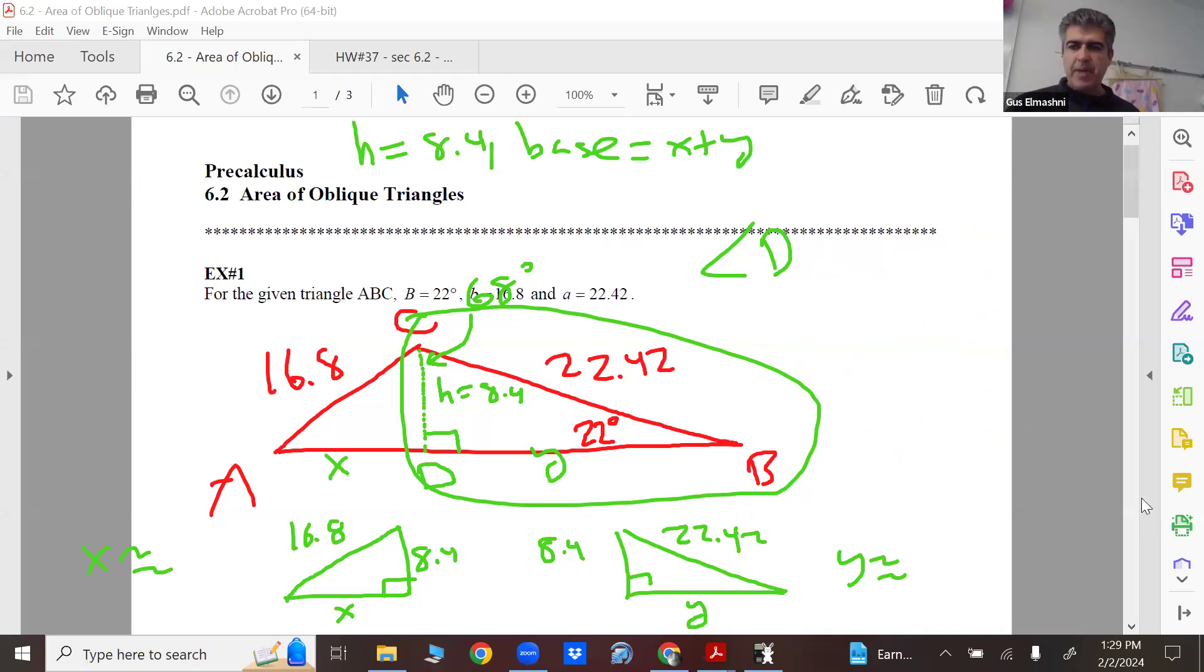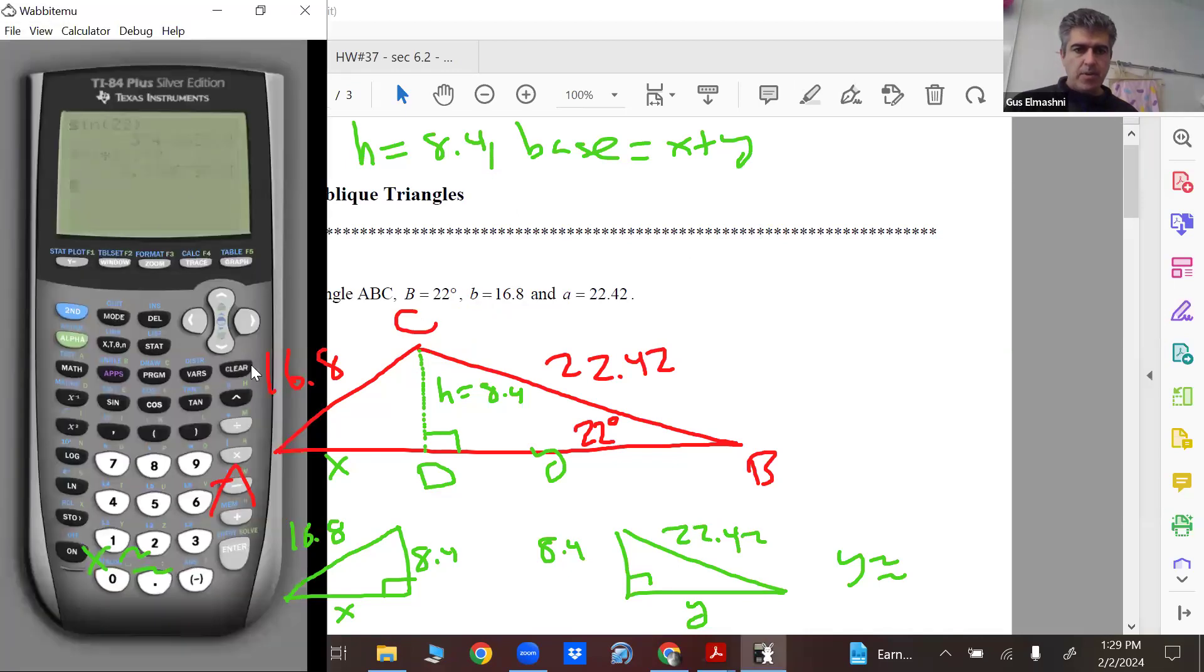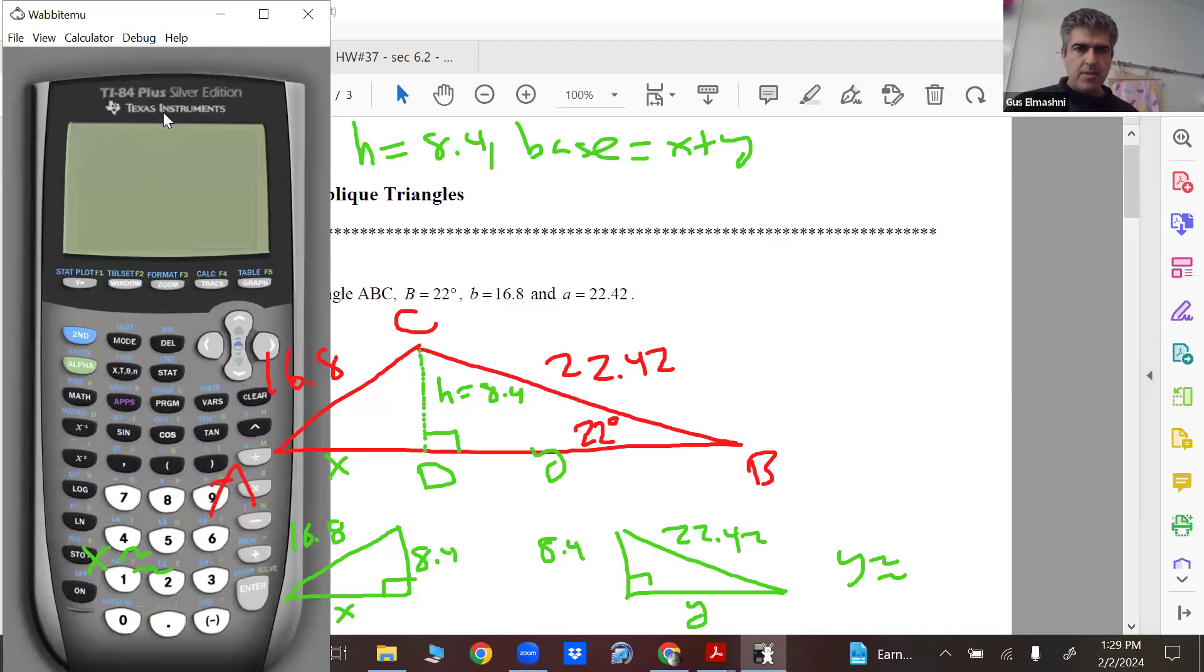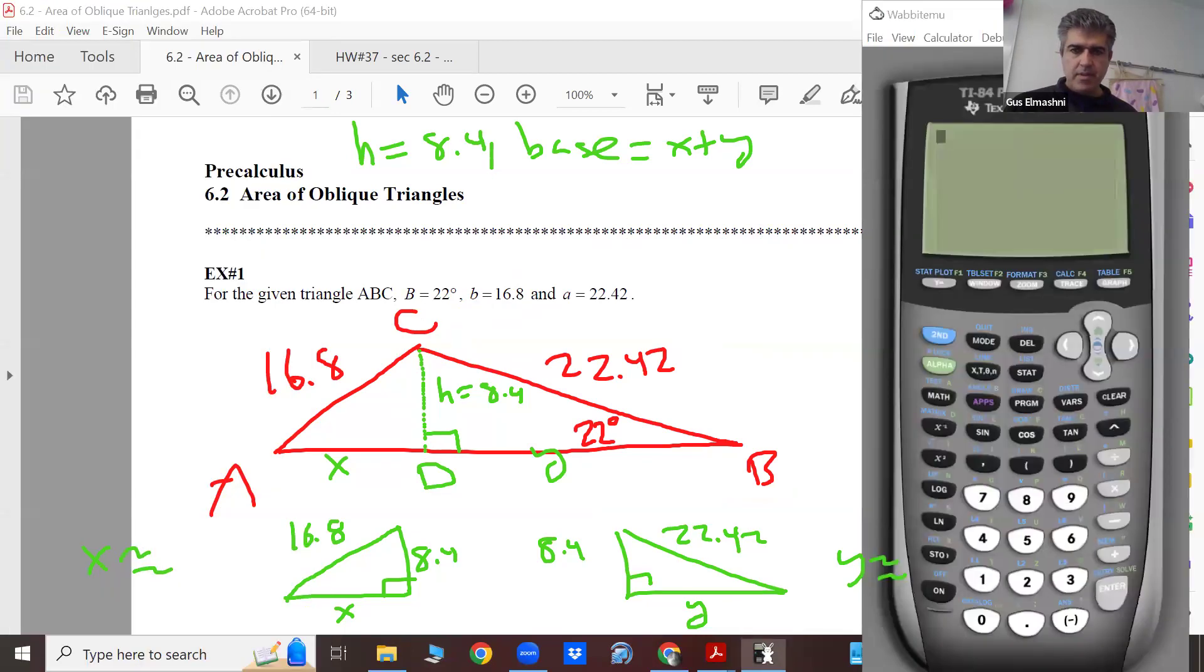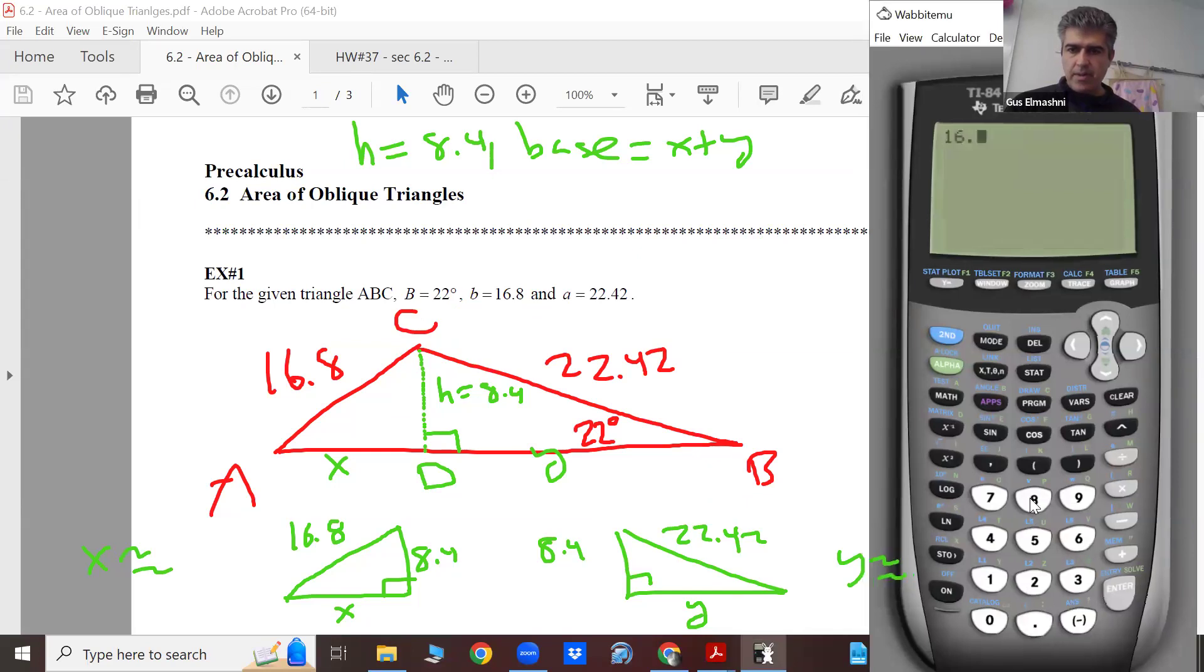Let's get the base, which is x plus y. Let me erase some of this stuff here, it's getting a little too busy. So let's solve for x and y, so I'm using my trusted calculator. I'm going to do 16.8 squared minus 8.4 squared. My eyes are just not too great these days. Root it. It's about 14.55.